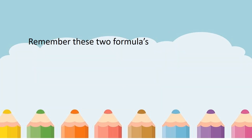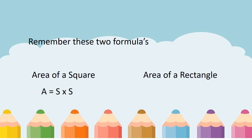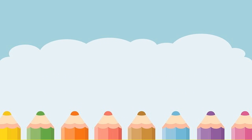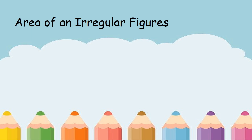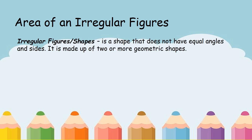Remember those two formulas: for the area of a square we have A equals S times S, and for the area of a rectangle we have A equals L times W. Those two formulas are important in finding the area of irregular figures. When we say irregular figures or shapes, it is a shape that does not have equal angles and sides — it is made up of two or more geometric shapes.